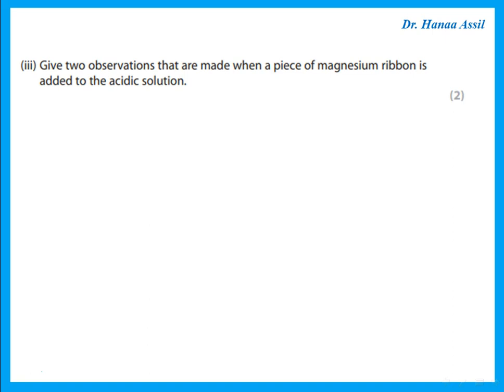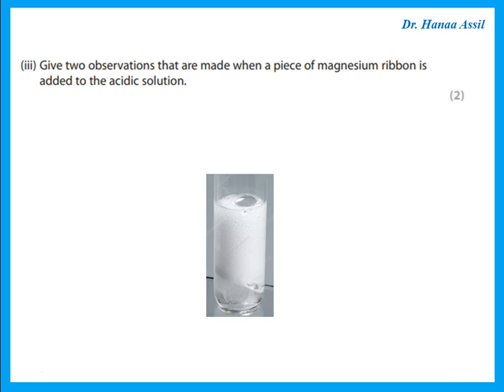Give two observations that are made when a piece of magnesium ribbon is added to acidic solution. Magnesium in acid will give hydrogen gas, so we will see bubbles of gas — bubbles of gas, fizzing, and effervescence are the same thing, so don't mention two of them as two separate points. The other observation is that the magnesium solid will disappear or become smaller.